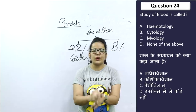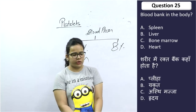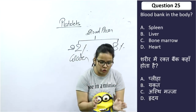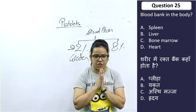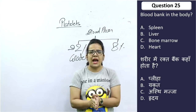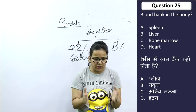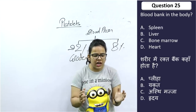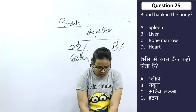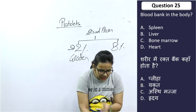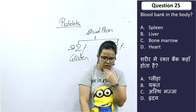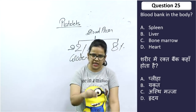And the last question of today: Which organ in the body is called the blood bank? The answer is the spleen. The spleen is referred to as the blood bank of the body.